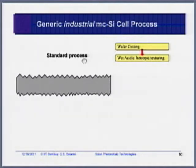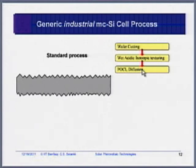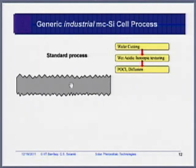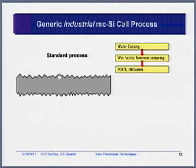The next step is to make a junction — specifically POCl3 diffusion. Your starting wafer is P-type, so you want to make an N-type junction. This junction is very thin: 200–400 nanometers. Your silicon wafer is 180 microns thick. The doping level of the silicon wafer, as discussed in the design, is about 10^15 to 10^16 per cm³.